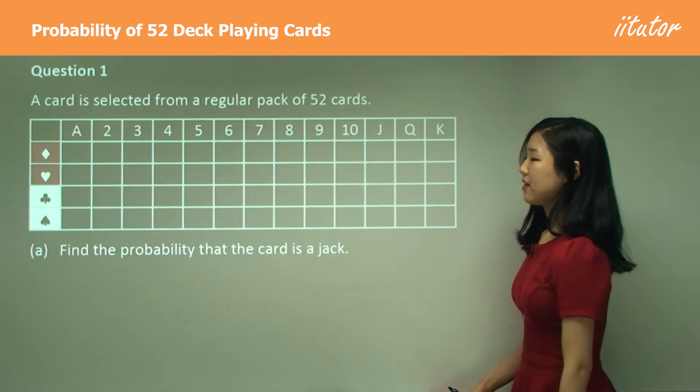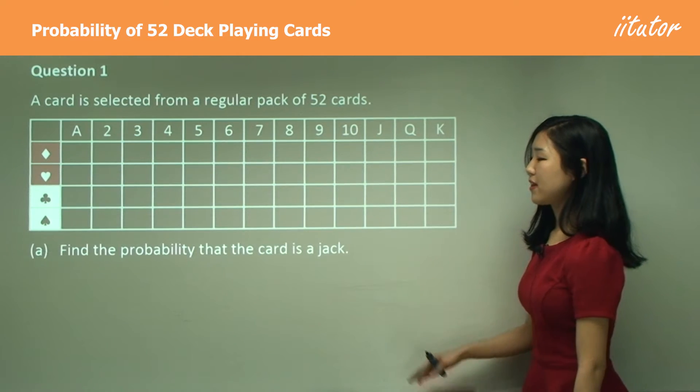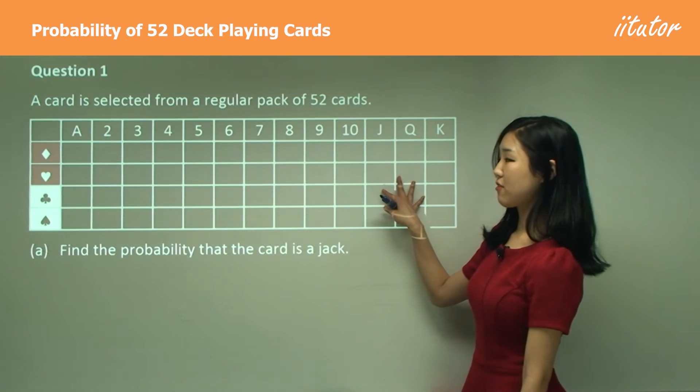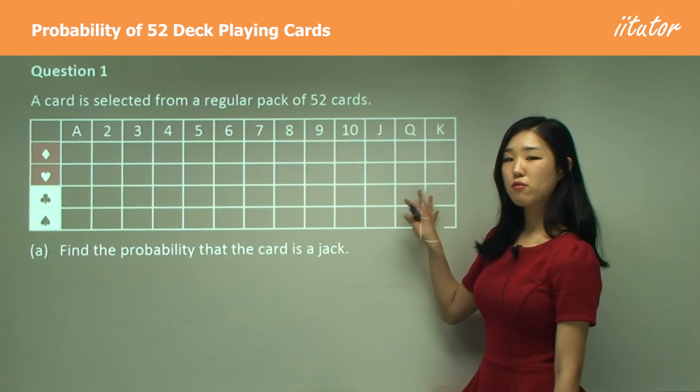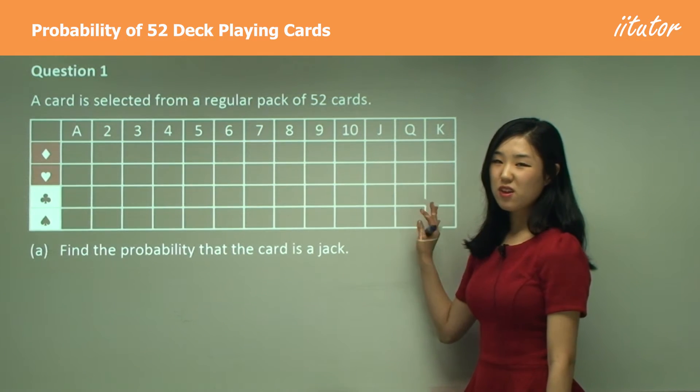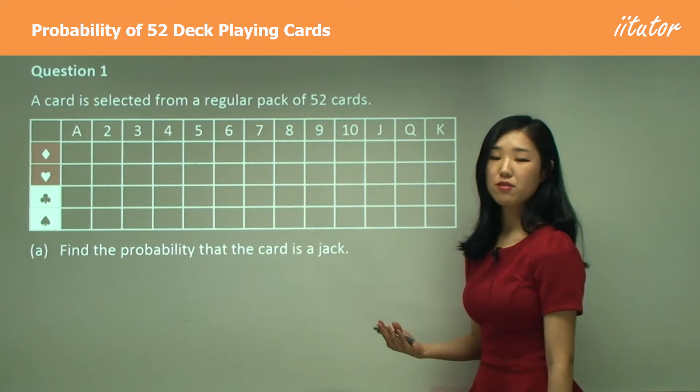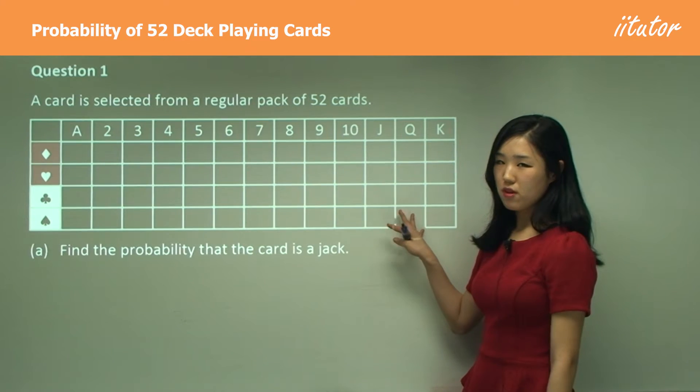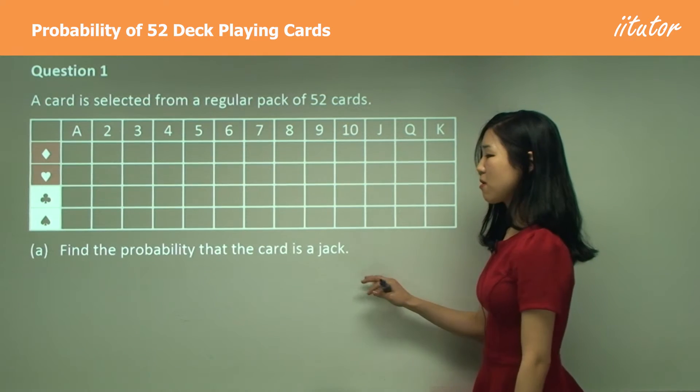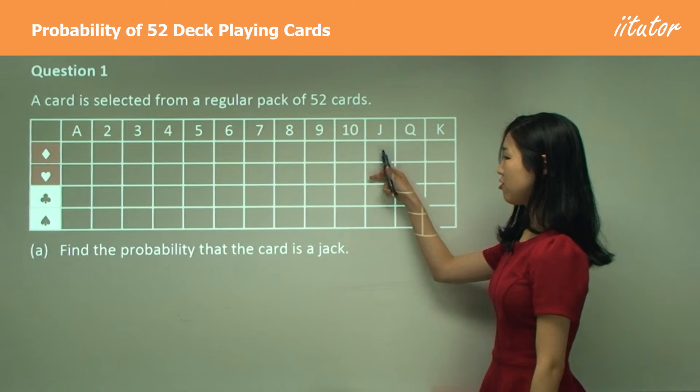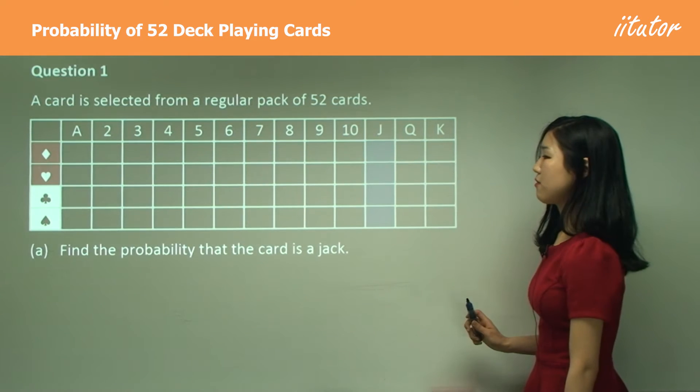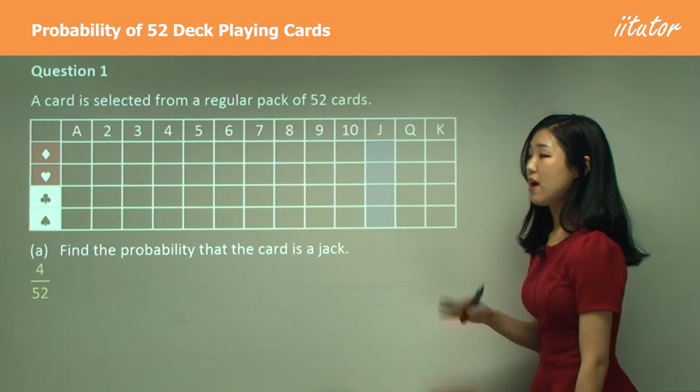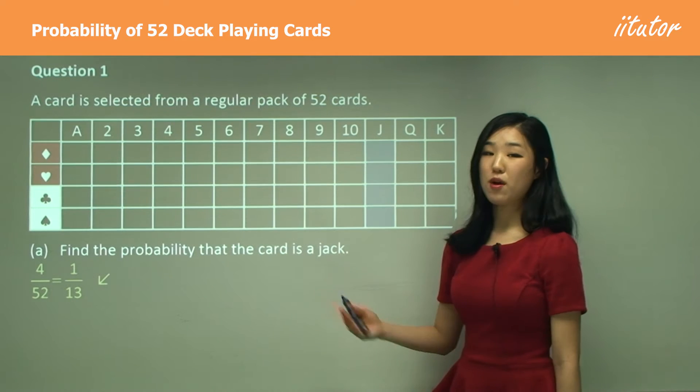Part a: Find the probability that the card is a Jack. You can see I've got the table here, and I always want to refer to this table. If you get used to this and you think you can do the questions without the table, that's great, but for most of you I do recommend you draw this up because it really does help. Find the probability that the card is a Jack—Jack is these, so therefore it's simply 4 out of 52. Make sure you always simplify it: 1 over 13.